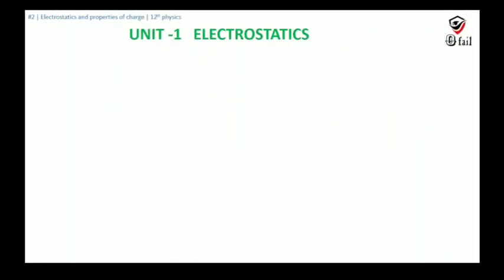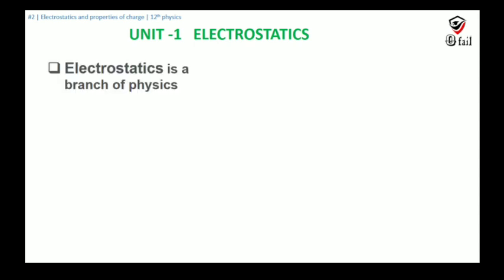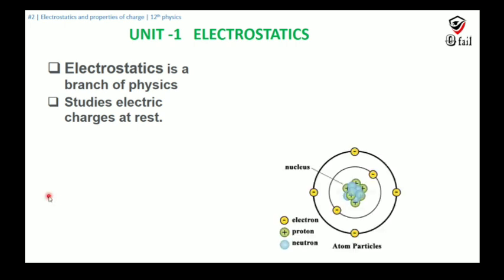Electrostatics is the first unit, so we must know what electrostatics is. Simply, it is one branch of physics. The word 'static' means rest, so electrostatics is the study of the properties of electric charges that are at rest. We must also know what electric charge is — in our last session we discussed atoms, where we found electrons, protons, and neutrons carrying electric charges.